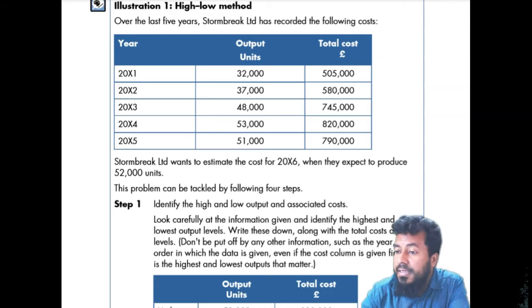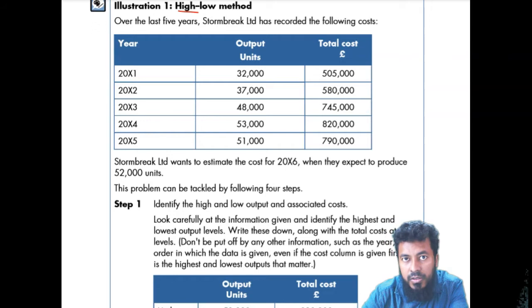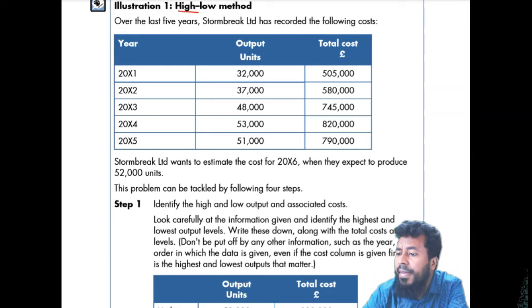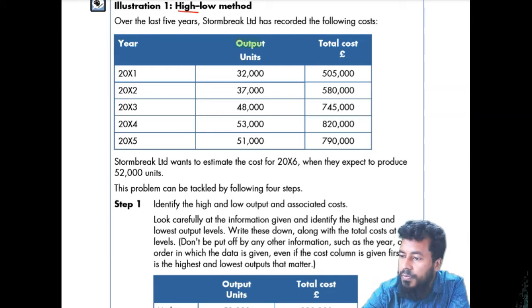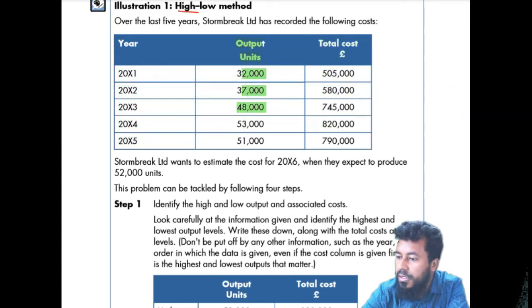Welcome everybody. This illustration is about the high-low method. The high-low method is used to find your variable cost per unit and fixed cost. You'll be given a total cost, but it won't be split into fixed and variable cost — you need to find it out in a suitable manner.